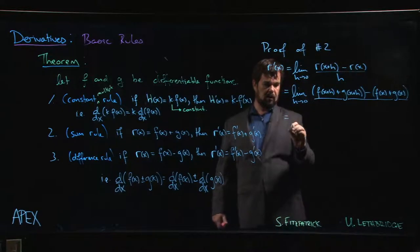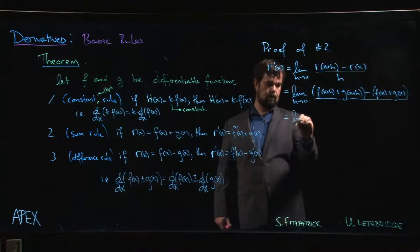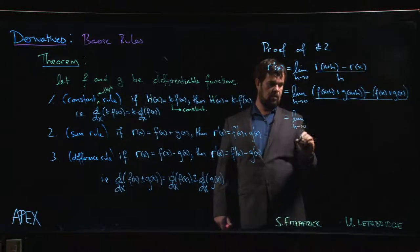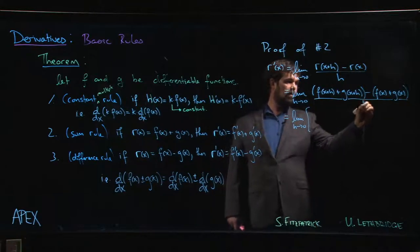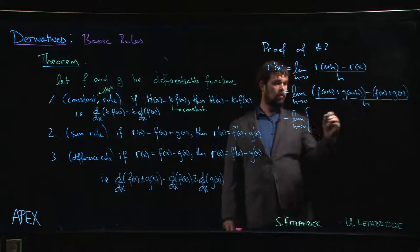The next step is going to be a little bit of rearranging. Limit as h goes to 0, so we're going to group together the f of x terms: f of x plus h minus f of x.